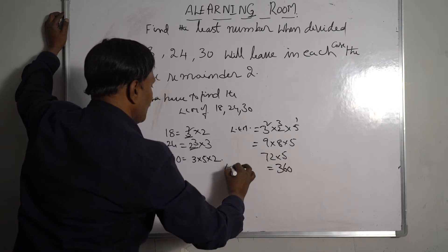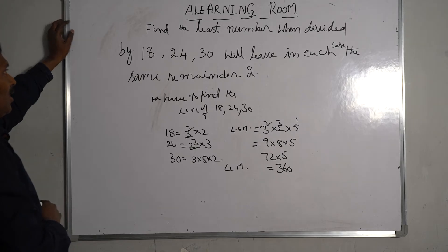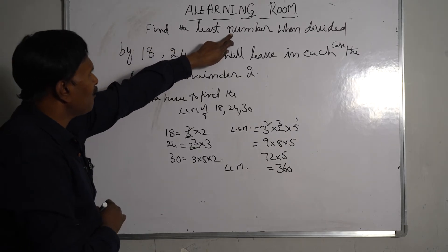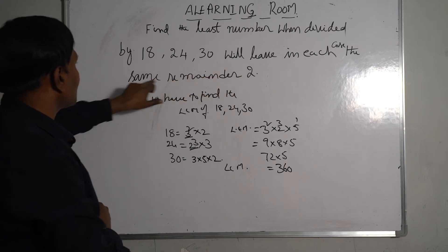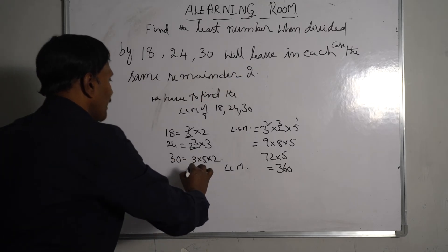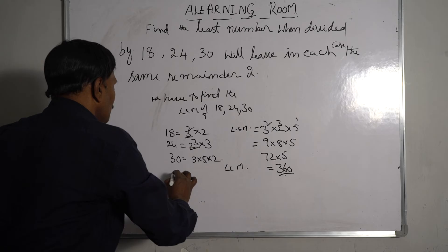So it means find the least number when divided by 18, 24, 30 will leave in each case the same remainder 2. The LCM is 360, so the required number is...